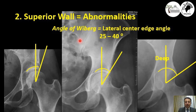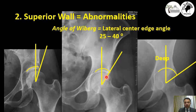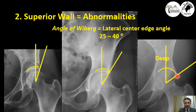Another way of measuring the superior wall, or the lateral coverage, or the dome, is measuring the lateral center edge angle. Taking a point at the center of the head with a vertical line going upward, and another line touching the lateral edge of the dome, an angle is measured in between. This angle should be between 25 and 40 degrees. If this angle is small, the lateral edge is incomplete and the acetabulum is dysplastic. If this angle is more than 40 degrees, the acetabulum is over-covering the head — that means we have a pincer femoroacetabular impingement.